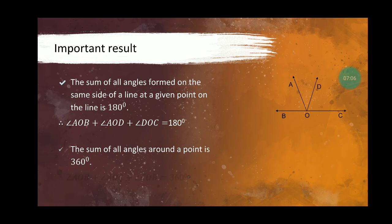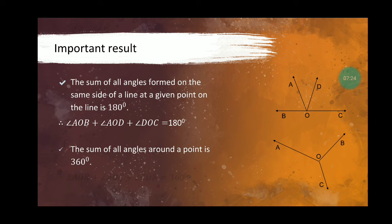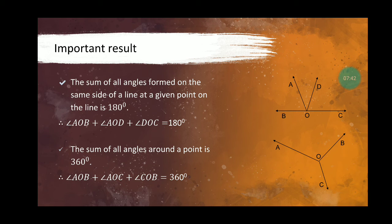Another important point: the sum of all angles around a point is 360 degrees. In the figure, if we go all the way around a point, three angles are formed. Going completely around the point means angle AOB plus angle AOC plus angle COB equals 360 degrees.